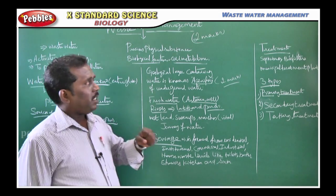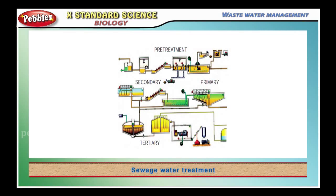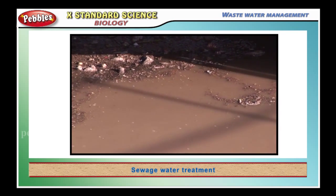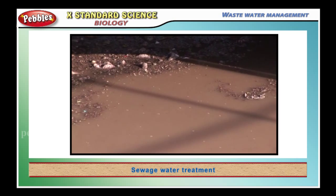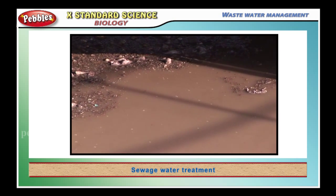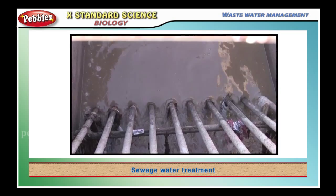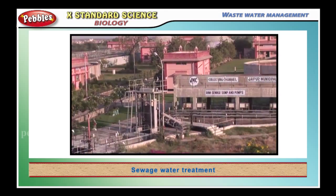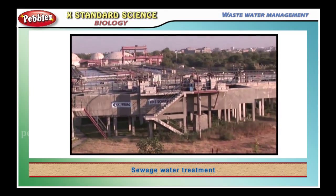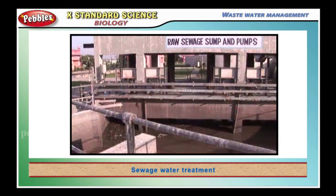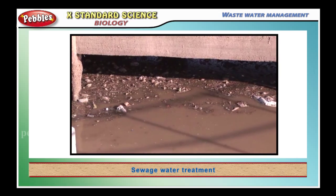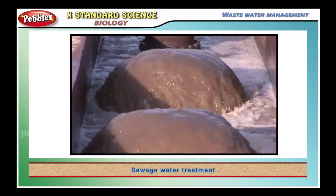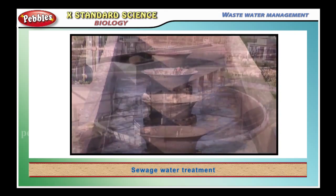This sewage is treated by three types. The treatment - normally the sewage water is collected in the form of septic tanks and it is treated in bio filters, and we have the municipal treatment plant. Every particular area has a sewage treatment plant where they purify this kind of waste water. So, the three types of treatment.